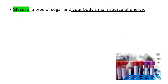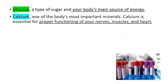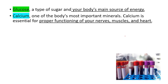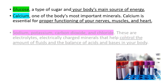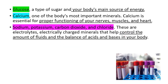We will look at glucose, which is a type of sugar and your body's main source of energy. We'll also look at calcium, which is one of the body's most important minerals — it's essential for proper functioning of your nerves, muscles, and heart. Additionally, we'll examine sodium, potassium, carbon dioxide, and chloride, which are electrically charged minerals that help control the amount of fluids and the balance of acids and bases in your body.